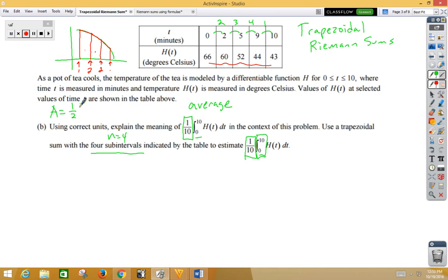Our first trapezoid would be 1/2, base 1 would be 66, base 2 would be 60. So 66 plus 60. And our height, our first height, was 2. Our second trapezoid, 1/2. Remember, our second trapezoid, this side is used twice. So we use the 60 once here. We're going to use the 60 and the 52, 60 plus 52 with a height of 3. Notice the 60 gets used twice.